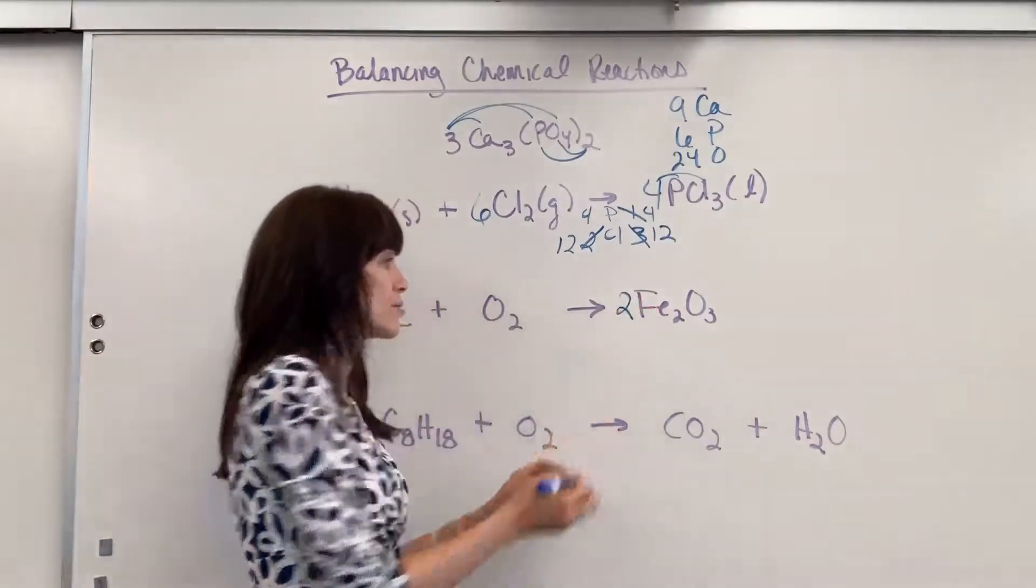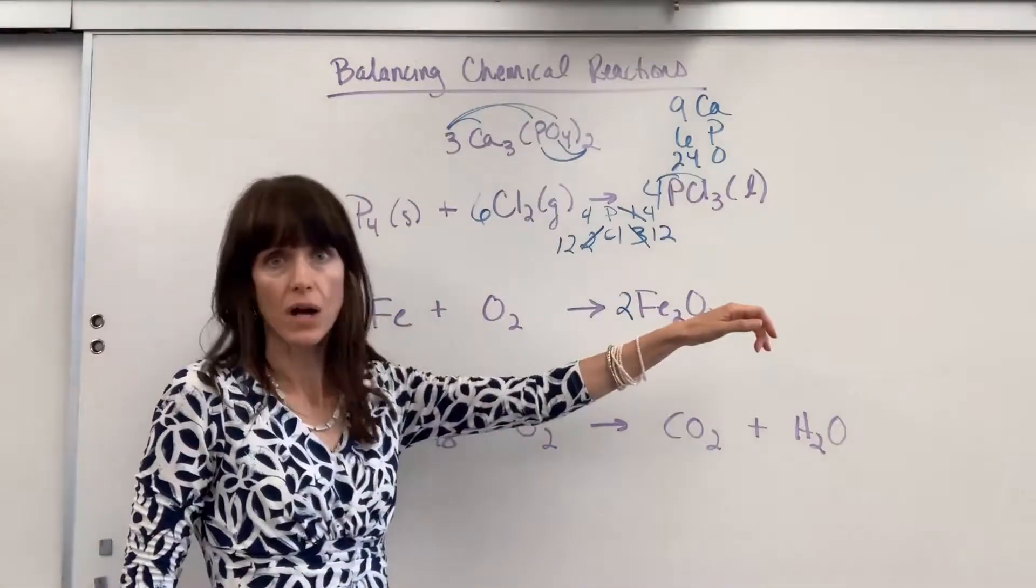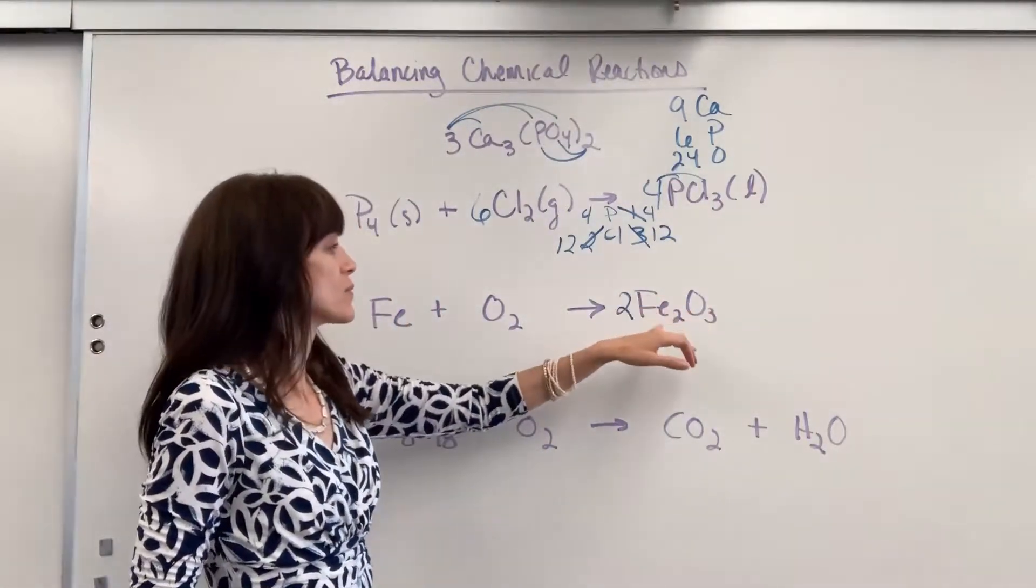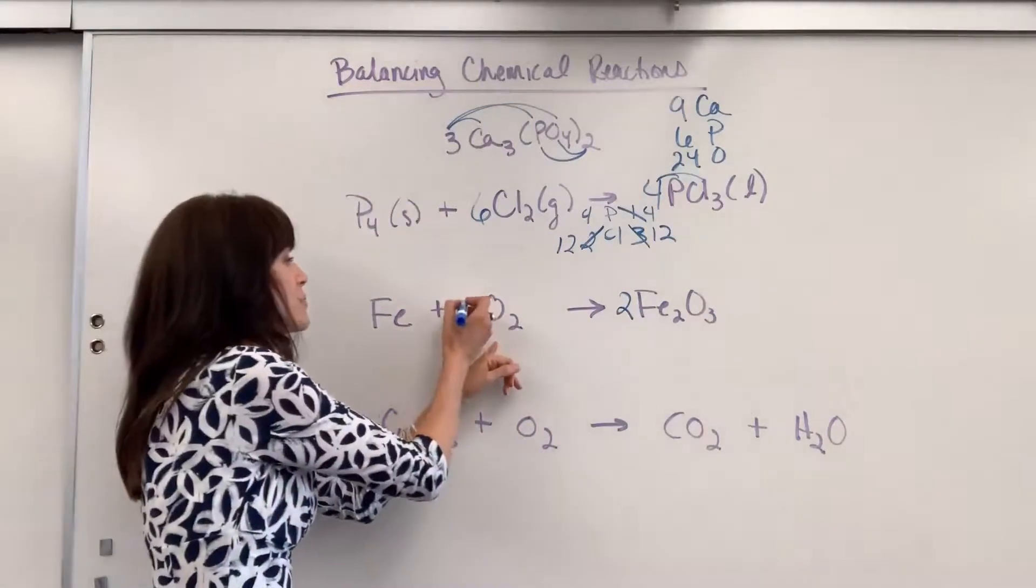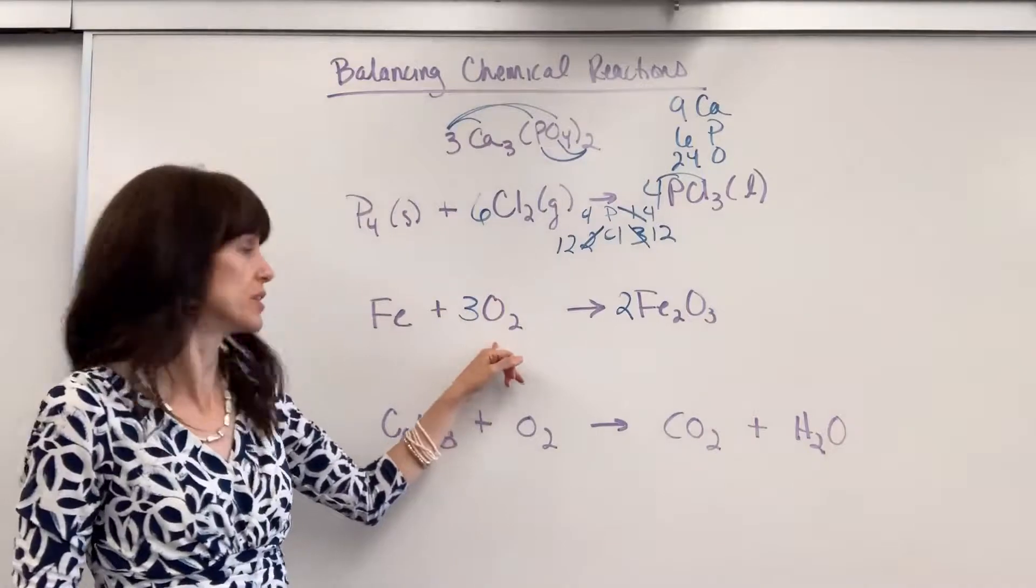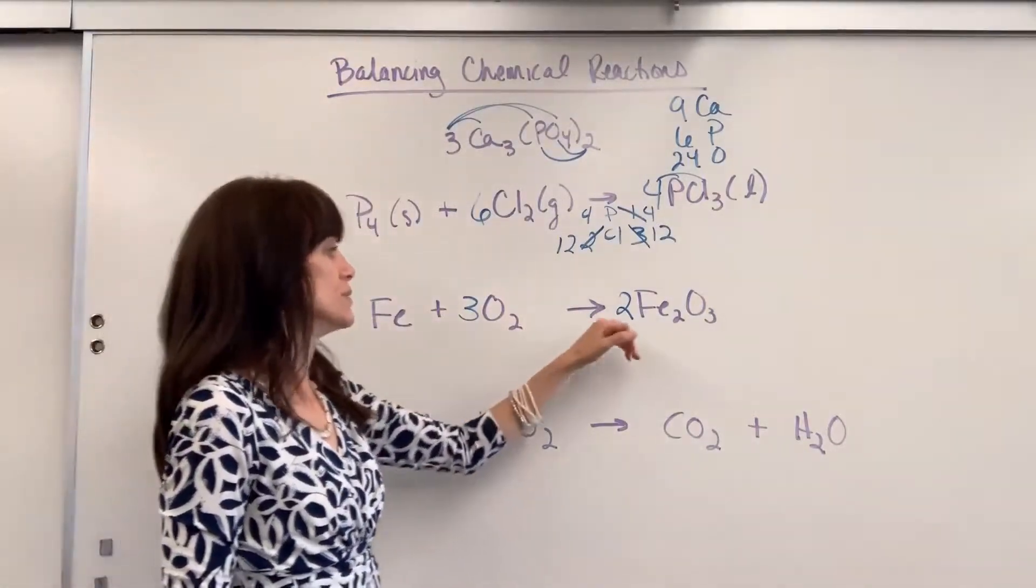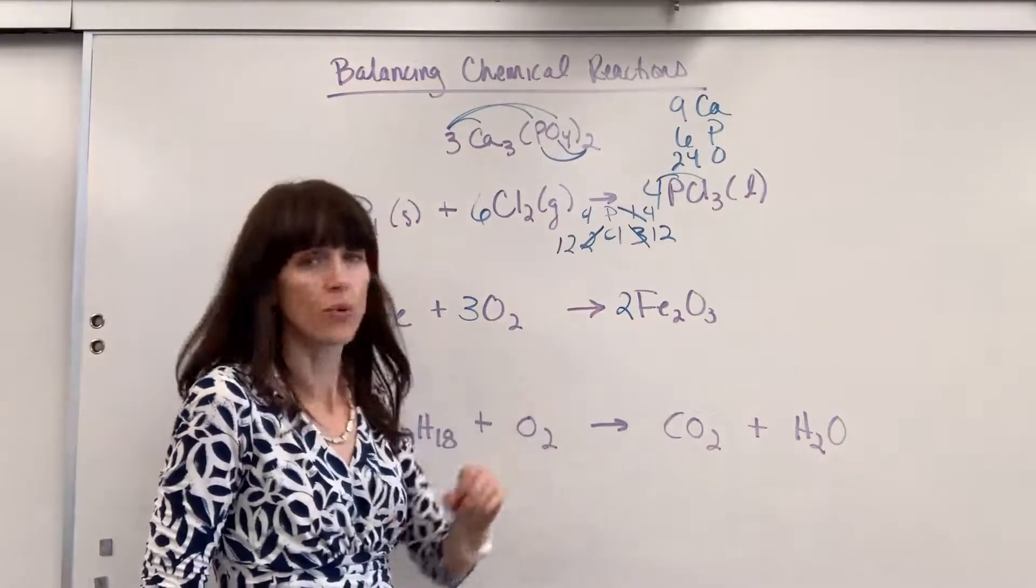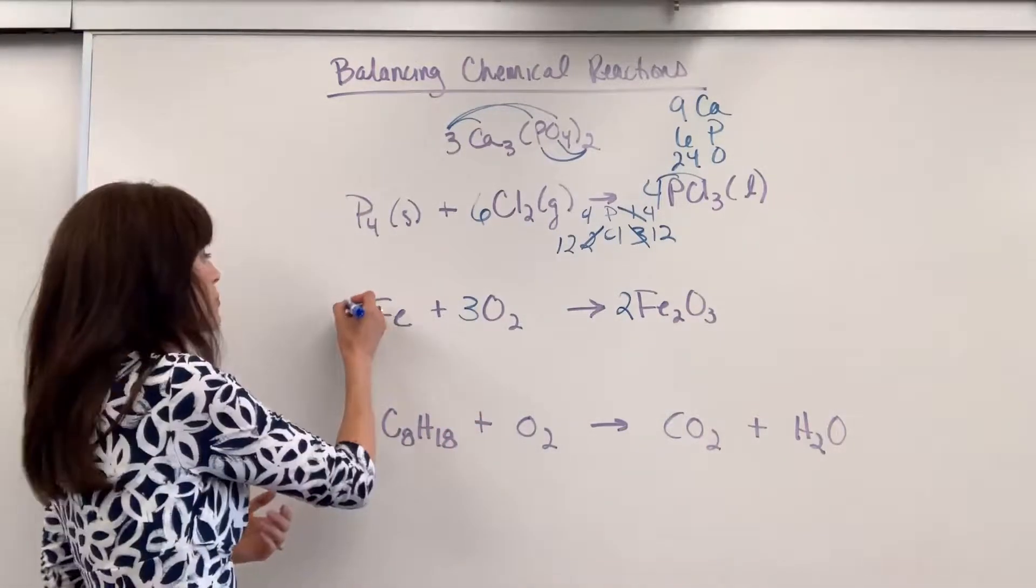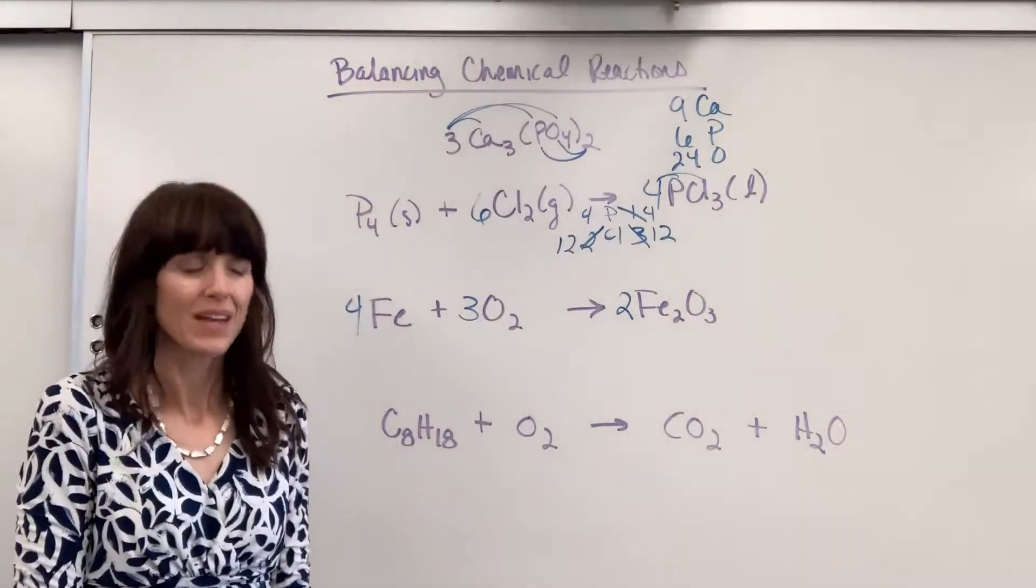So I'm going to put a two in front of the iron oxide, the iron three oxide, and that is going to give me six oxygen. So over here I have to put a three in front of the oxygen. Three times two is six. Two times three is six. Now let's look at the iron. I have four iron, two times two. So I put a four right there.